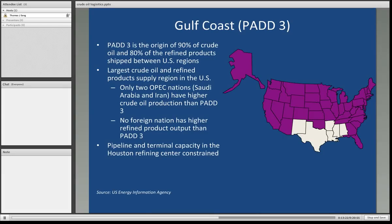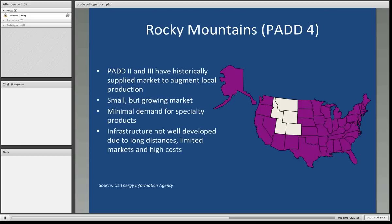PAD 3 encompasses the Gulf Coast states. It's the origin of 90% of the crude oil and 80% of the refined products shipped between U.S. regions — the largest crude oil and refined products supply region in the United States. Only two OPEC nations, Saudi Arabia and Iran, have higher crude oil production than PAD 3, and no foreign nation has higher refined product output than PAD 3. The pipeline terminal capacity in the Houston Refining Center is constrained, which is part of why gasoline prices remain fairly high. New refineries haven't been built in probably 50 years or more.